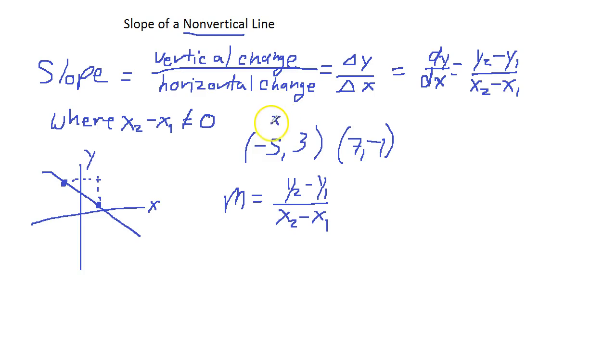So, I'm going to call this X1, because it's the X coordinate, and this is going to be Y1, the Y coordinate of the first point. This is going to be X2, the X coordinate of the second point, and Y2, the Y coordinate of the second point. So, Y coordinate of the second point, negative 1, minus Y coordinate of the first point, 3, over X coordinate of the second point, 7, minus X coordinate of the first point, negative 5.